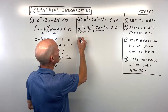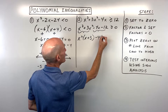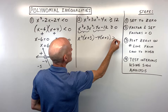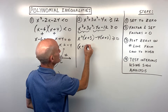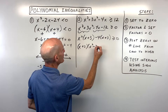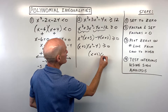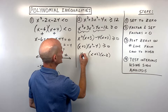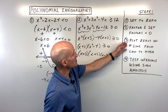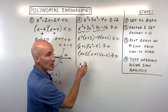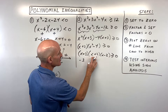We notice x plus 3 is a common factor, so factor it out, leaving x squared minus 4. That's a difference of two squares, which factors as x plus 2 times x minus 2. Setting each factor equal to zero: x plus 3 equals 0 gives x equals negative 3; x plus 2 equals 0 gives x equals negative 2; and x minus 2 equals 0 gives x equals 2.